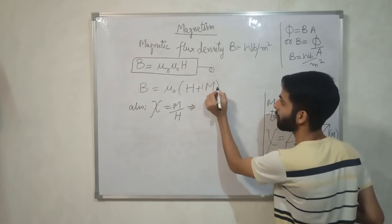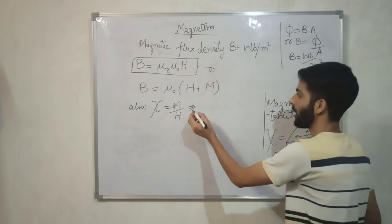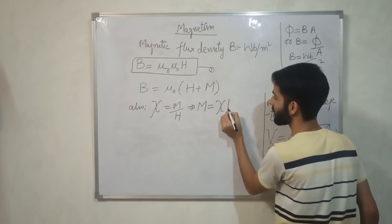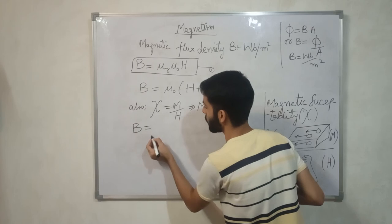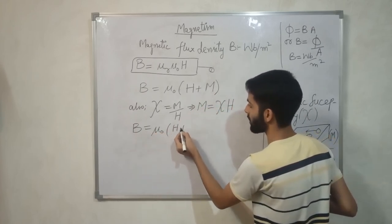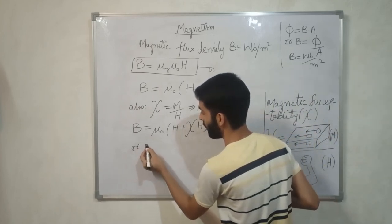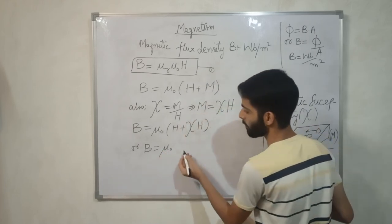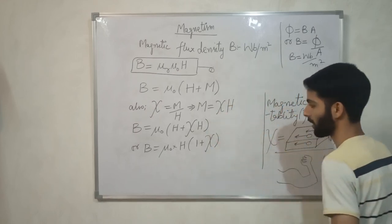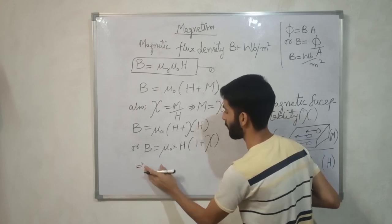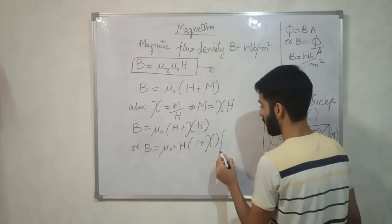From this, magnetization M = χ · H. Substituting into the equation B = μ₀(H + M), we get: B = μ₀(H + χH), or B = μ₀ · H · (1 + χ). This is the relationship between magnetic flux density and magnetic susceptibility.